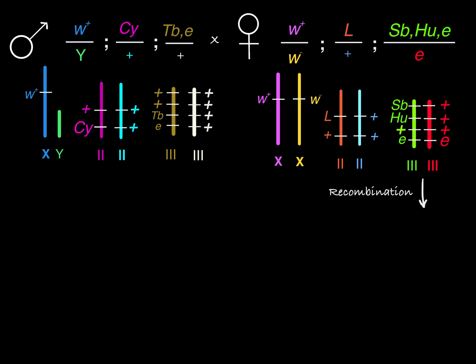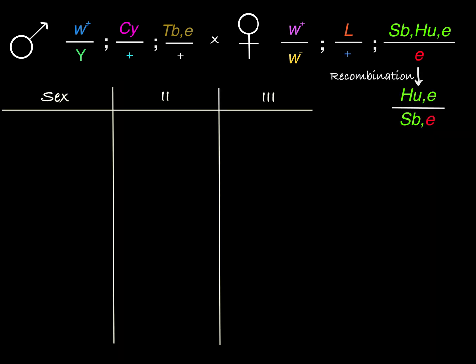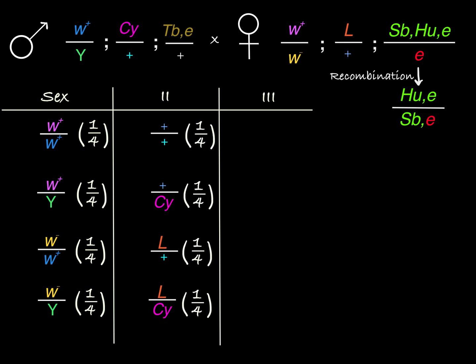We already showed that this female could have recombination happen in her third chromosome, creating recombinant chromosomes she could pass on to her offspring. Recombination on her X chromosome and second chromosome would not result in new allele combinations, so we don't have any other recombinant chromosomes to account for. Now let's map. We can pair the female W-plus X with the male X or male Y, and the female W-minus X with the male X or male Y — all four sex chromosome combinations occurring with equal chance of one quarter. For the second chromosome, we can pair the female wild type with the male wild type or male curly, and the female lobe with the male wild type or male curly — again, all one quarter.